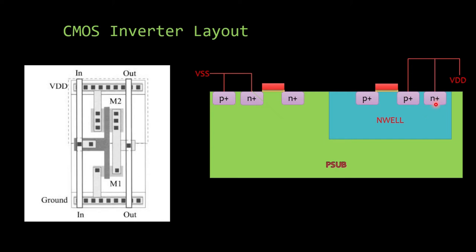We know these substrate connections need to be done in order to avoid body effect, which causes threshold voltage variation. But we must remember that even though we are not trying to create junction transistors, the way we have made the CMOS inverter layout has already created many PN junctions, as I will show you.